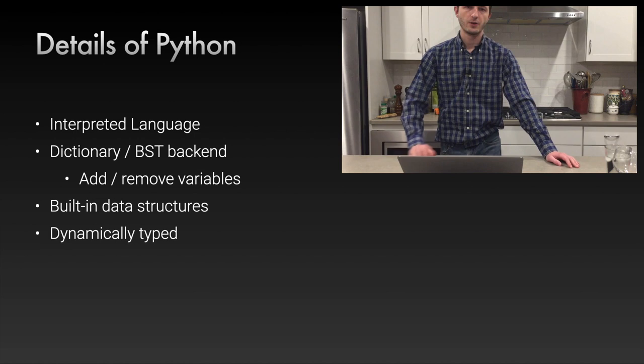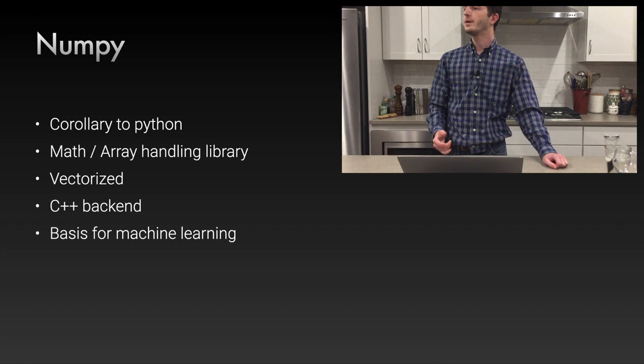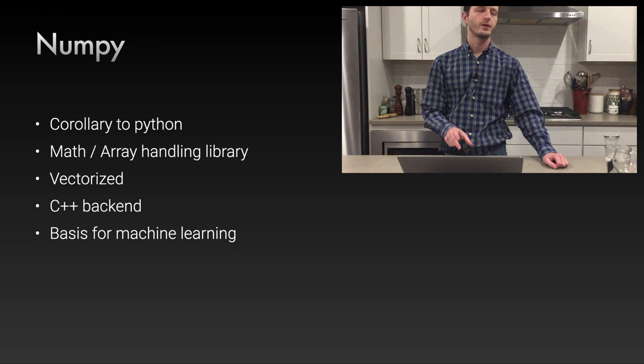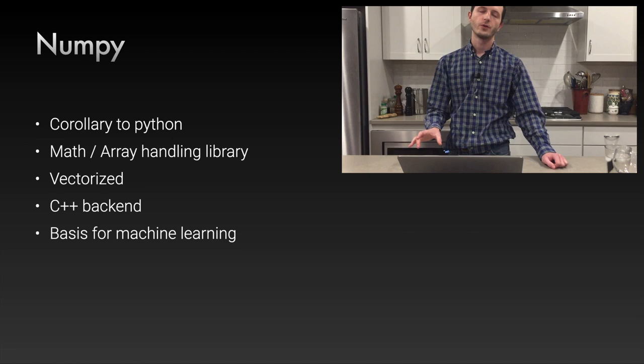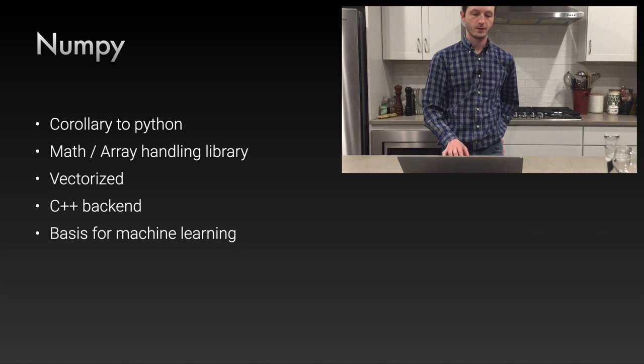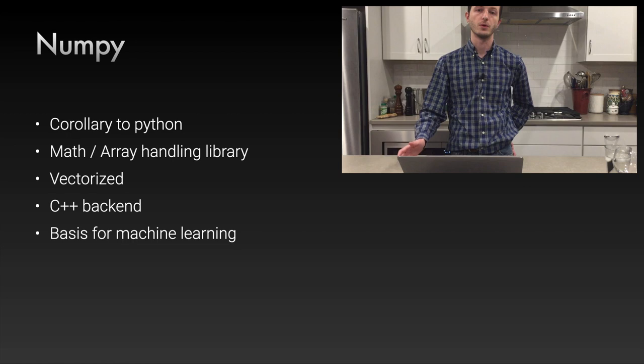NumPy is so important it's on the first slide. It's an array handling library with a lot of math built in. It is vectorized, meaning instead of writing for loops to iterate through arrays, you do operations on the entire array — so array1 equals array2 plus array3. It has a C++ backend which makes it very fast, and it's the basis for all machine learning and modern scientific computing in Python.